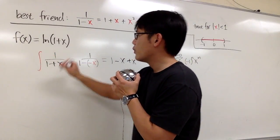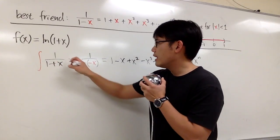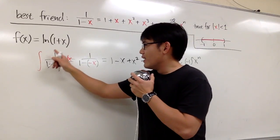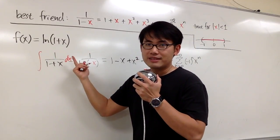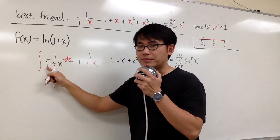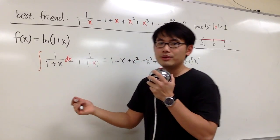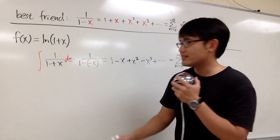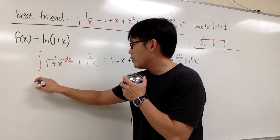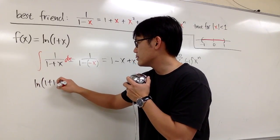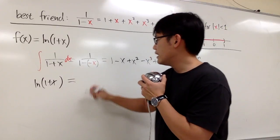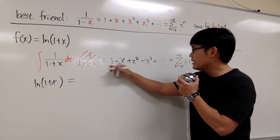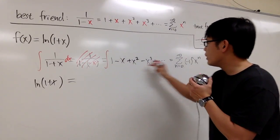Now let's integrate 1 over 1+x dx. Integrating the left side, we get ln(1+x), because with a u-substitution where u equals 1+x, the derivative is just 1, so du equals dx. I'll look at the expanded version and integrate term by term.